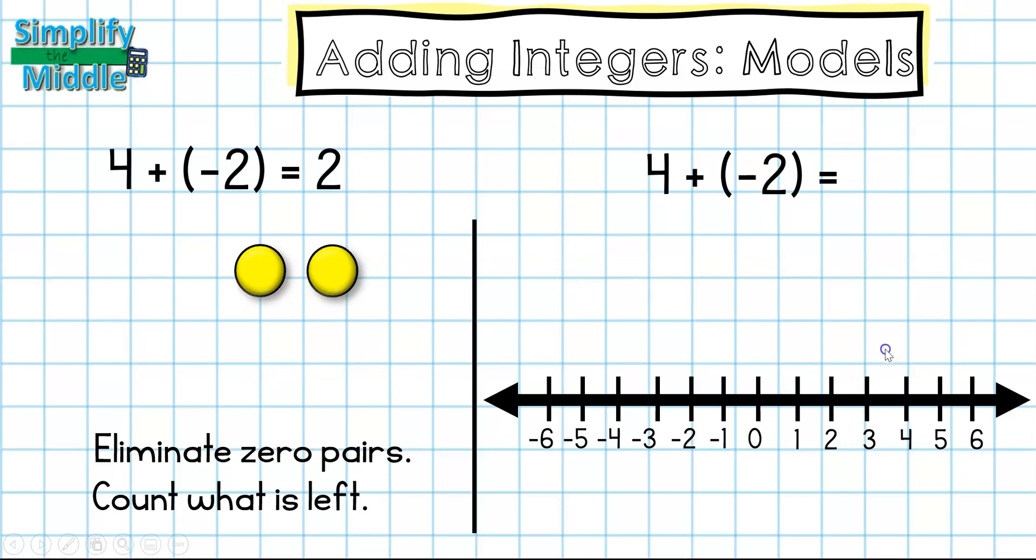On my number line I'll start at zero and because this is positive I'm going to go four to the right. My second number line is going to start right here but this is telling me to go two to the left. When I stop I get to an answer of two.